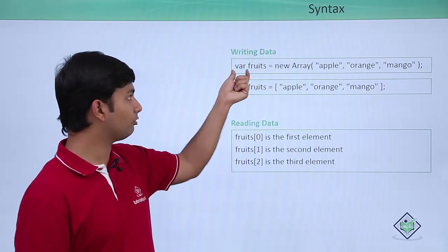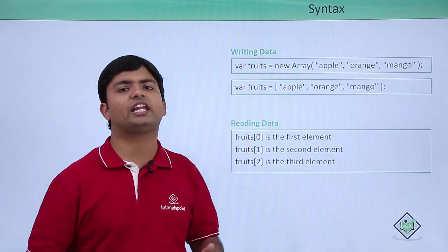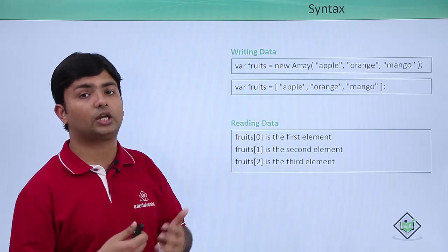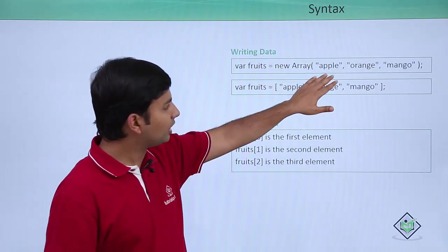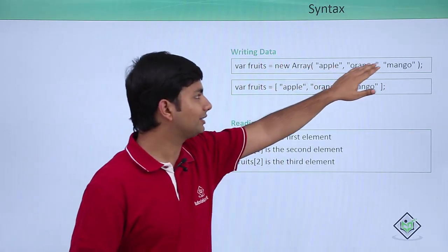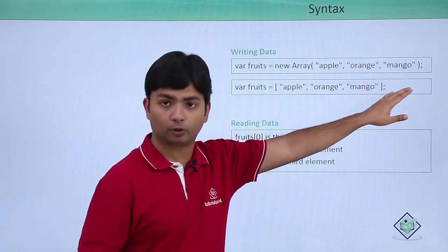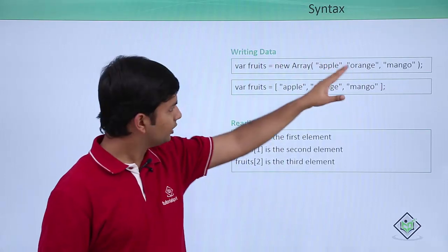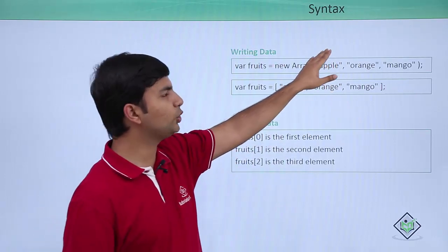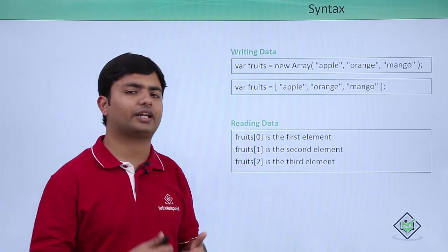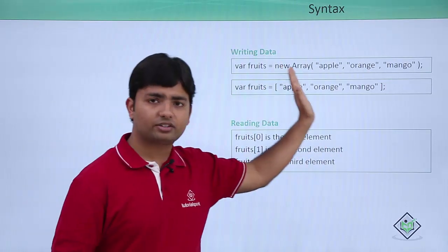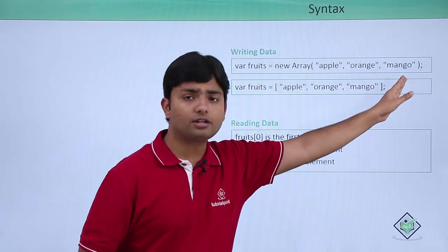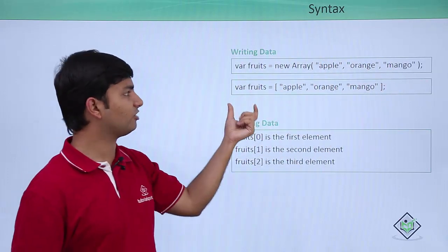Here I have taken a variable `var fruits`. Fruits is the name of my array, set equal to `new Array`. The `new` keyword allocates a fresh memory space, and inside that you can pass elements like apple, orange, mango — it is sequential storage. Here I have not specified the size; you can also do that by writing `new Array(5)` and then later assigning values. I directly stored the values, so the first element gets stored at index zero, then one, and two.